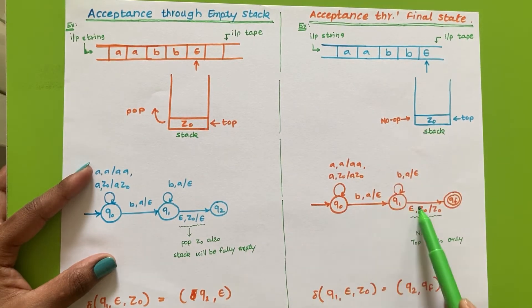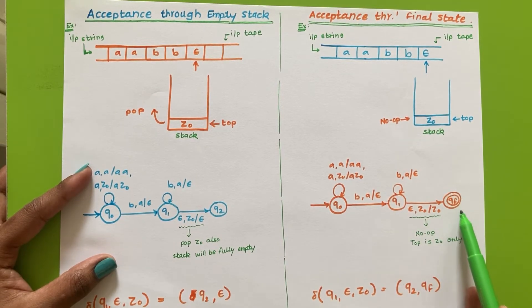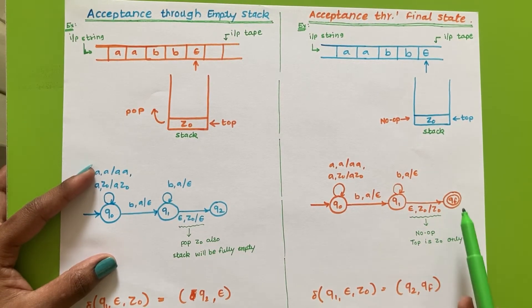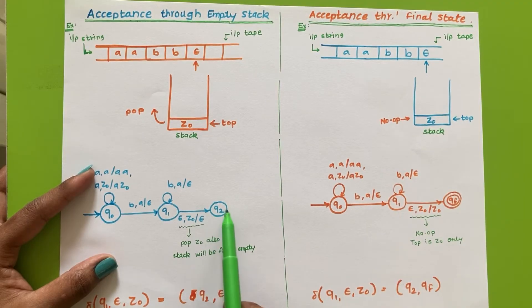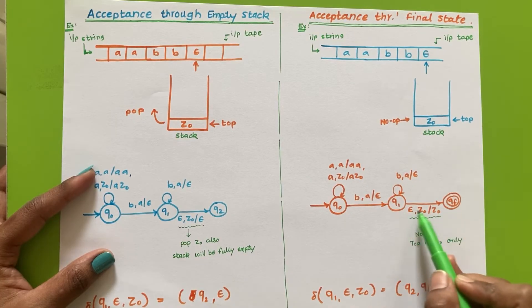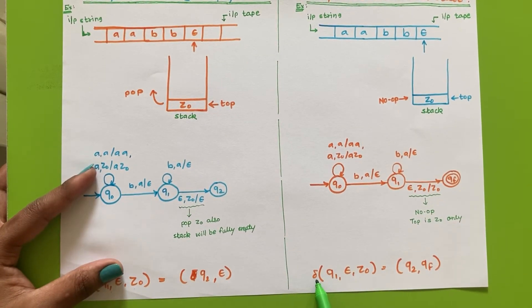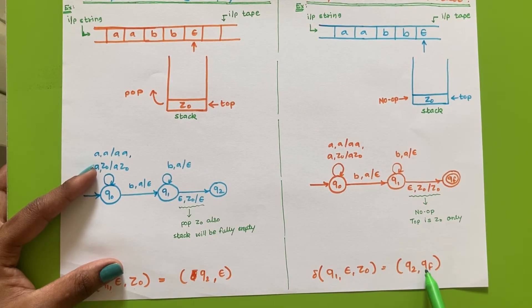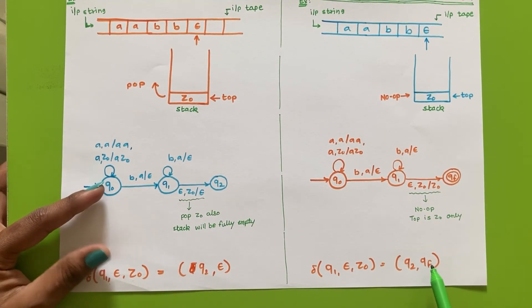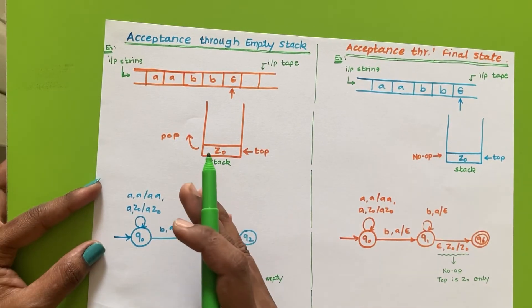In case of acceptance through empty stack, this last transition does not move to a final state. But in case of acceptance through final state, we need to end this transition at the final state only. That will be represented as: delta of q1 comma empty comma Z0, is equal to qf — where qf is the final or accept state. That is the key difference between acceptance through empty stack and acceptance through final state.